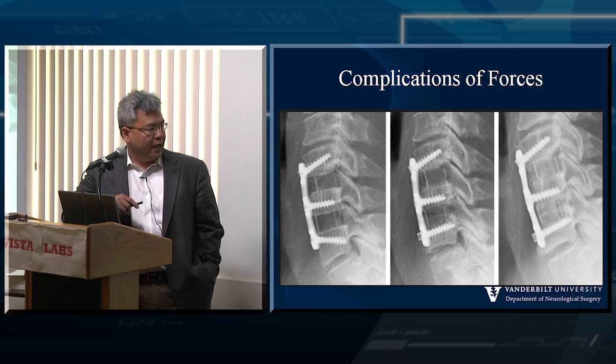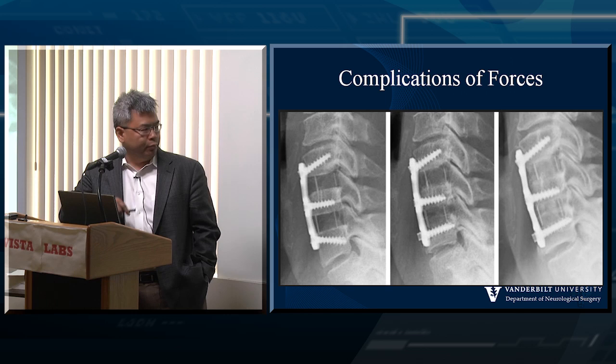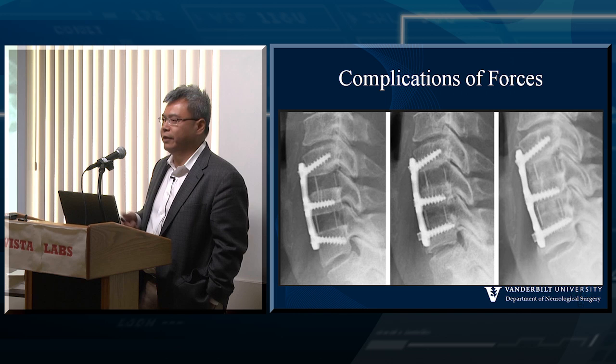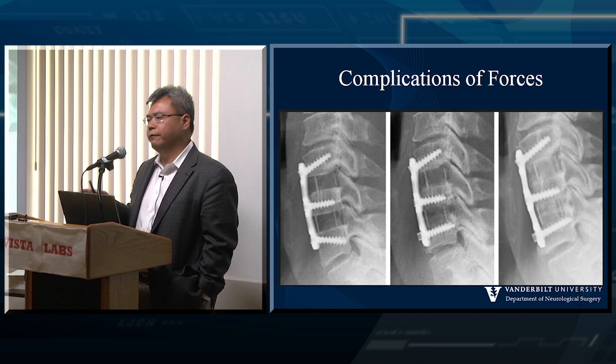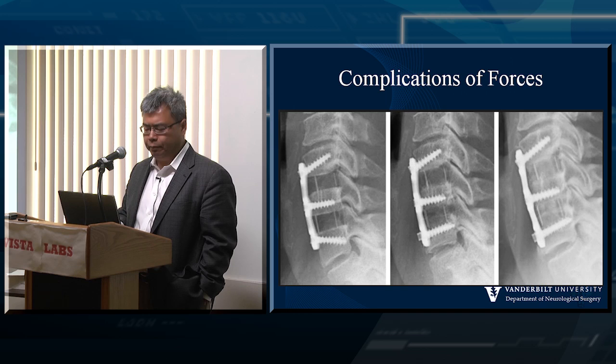Here's a simple ACDF example, just to throw you a curve ball. You see an x-ray like this — wow, that looks pretty good: nice cages, tall inner spaces, plates put on perfectly. But then it progresses to failure, and you're like, what can you do, these things happen, right? But does it really? Because this is really a complication of not understanding the compressive forces across that area, leading to subsidence and plate issues related to that.